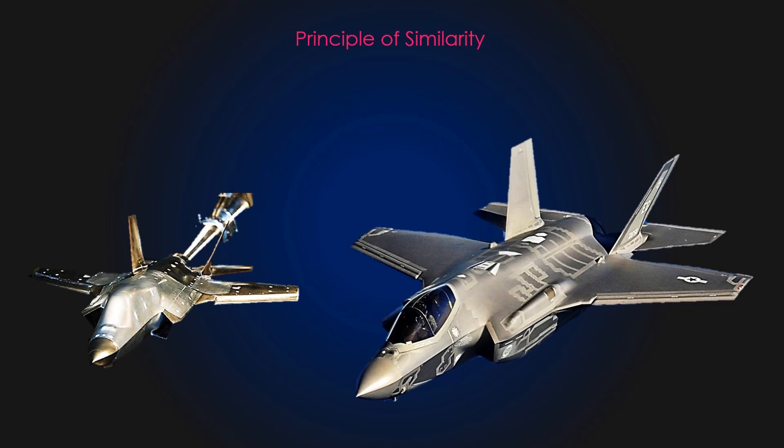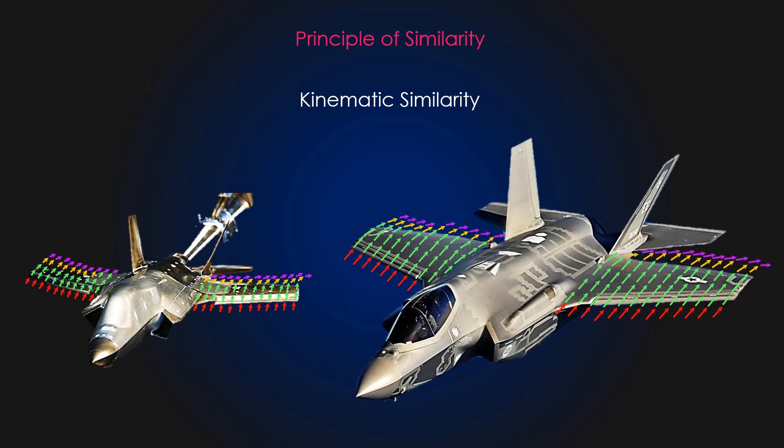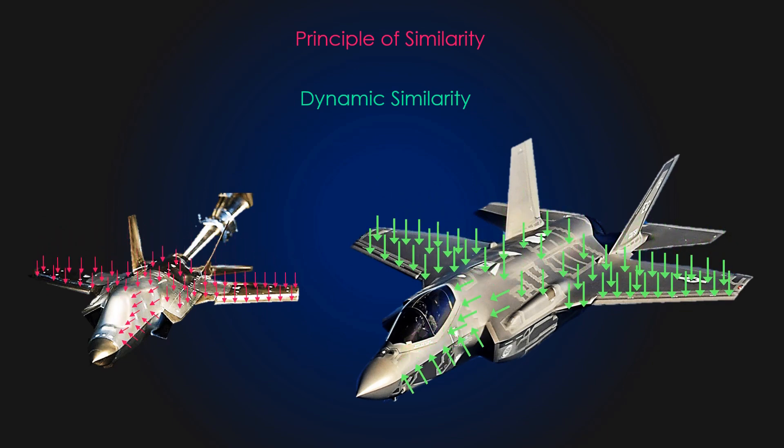The second condition is kinematic similarity, which means that the velocity at any point in the model flow must be proportional to the velocity at the corresponding point in the prototype flow. The third and most restrictive similarity is that of dynamic similarity. Dynamic similarity is achieved when all forces in the model flow scale by a constant factor to corresponding forces in the prototype flow. All three similarity conditions must exist for complete similarity to be ensured.